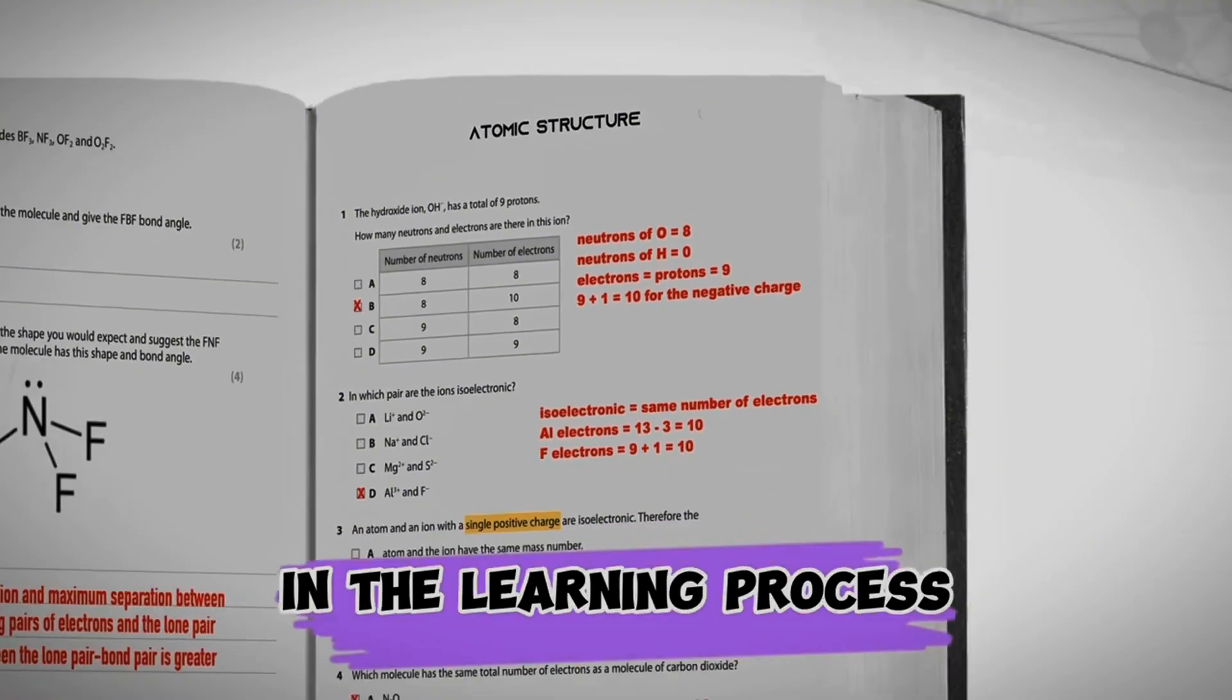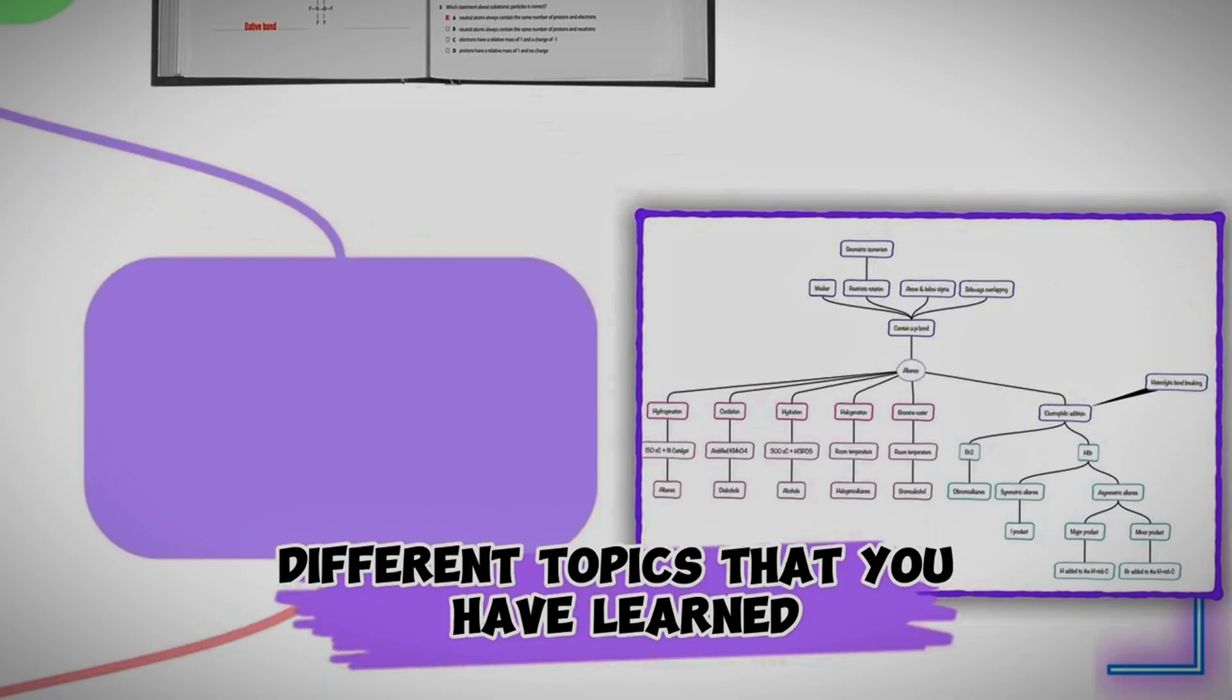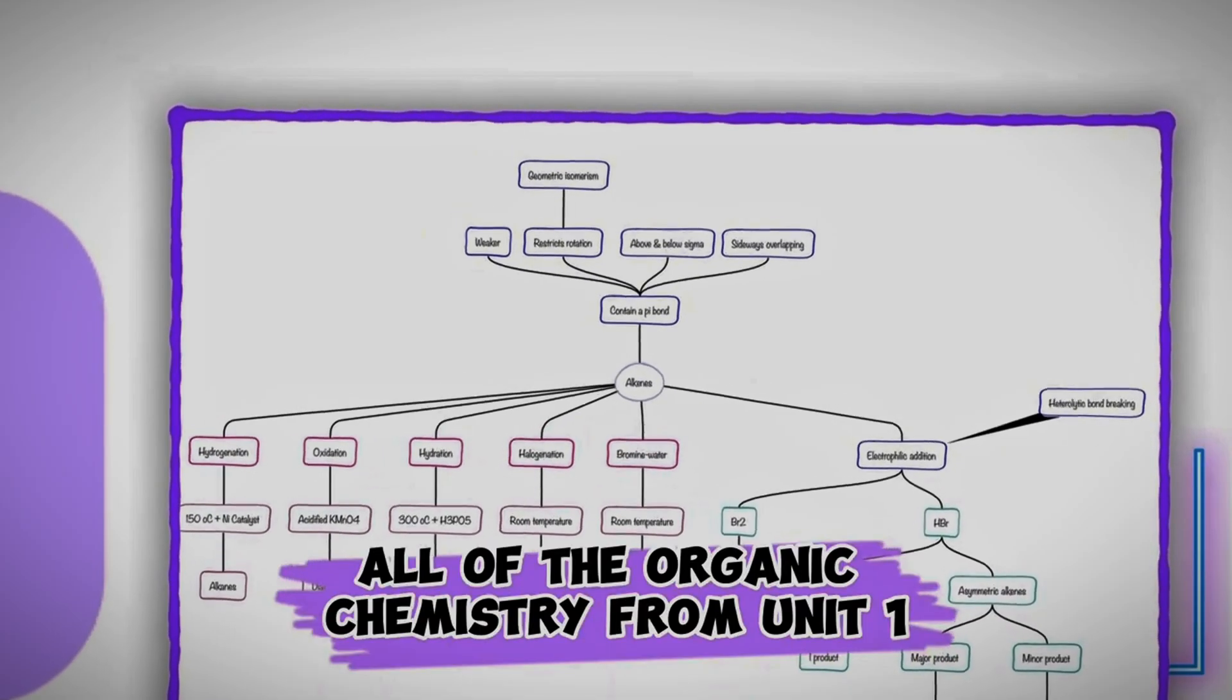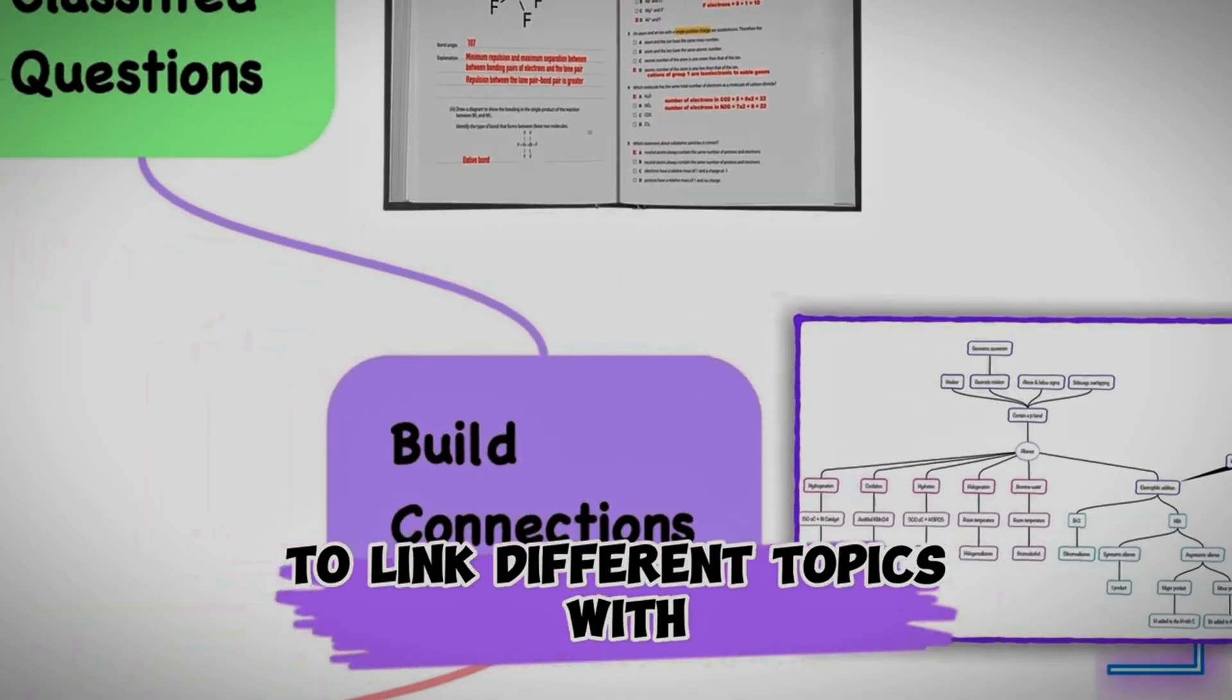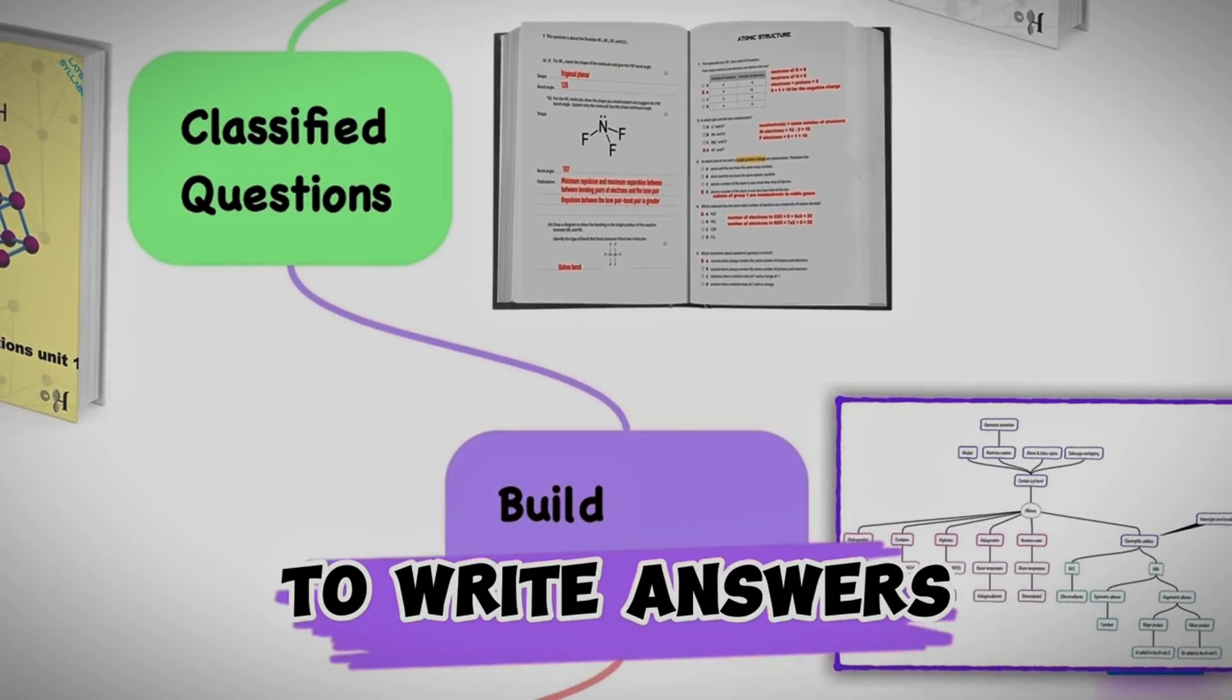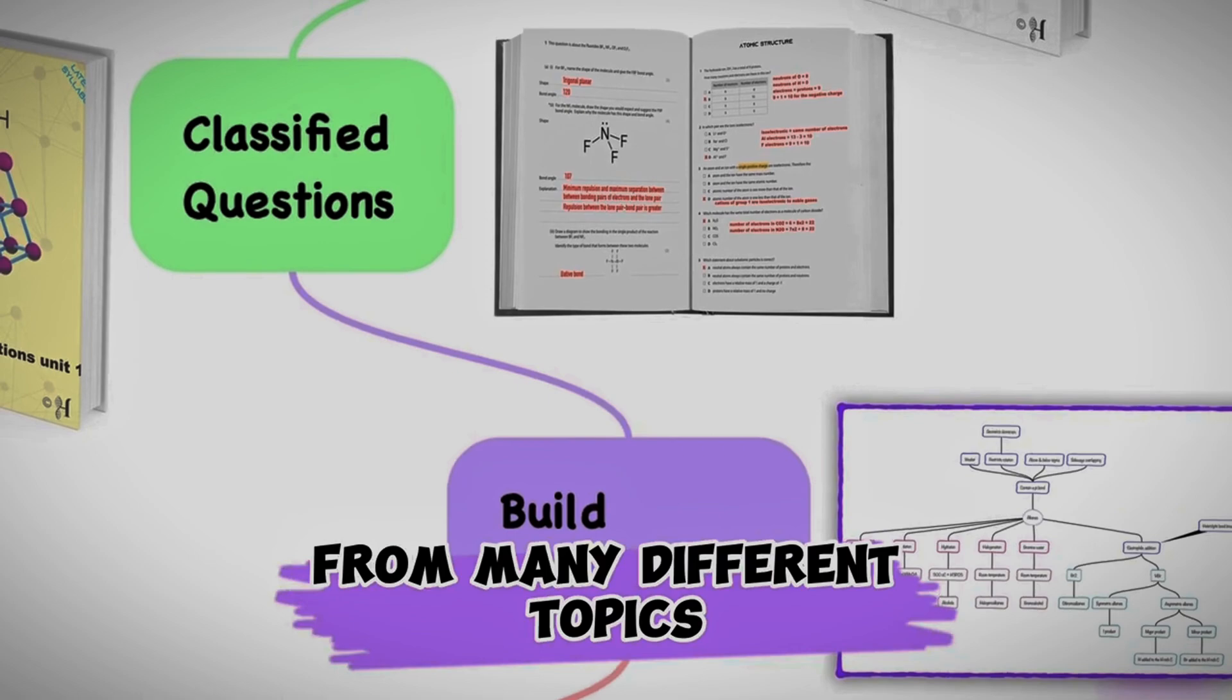The next step in the learning process is to link up different topics that you have learned. I tend to make mind maps like the one we have here, which links up all of the organic chemistry from unit 1. This would help the students to link different topics with one another. Many of the exam questions test your ability to write answers where the question is asking you about topics from many different areas.